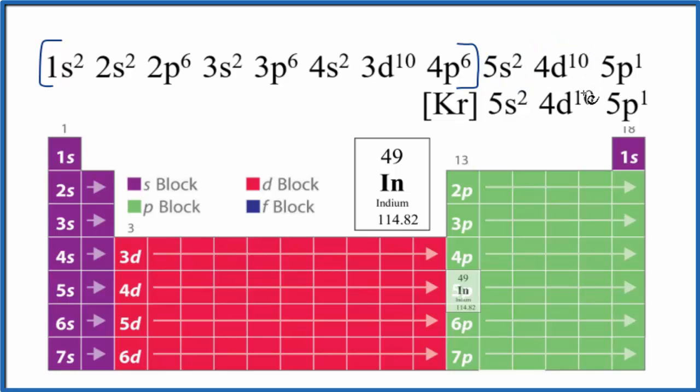So when indium forms ions, it'll lose 3 electrons. So it forms this In3+ ion. And it'll lose electrons from the s and the p orbitals. So it's going to lose these electrons here. So it'll lose these 2 and this 1 here. That's 3.